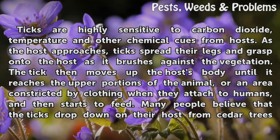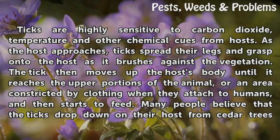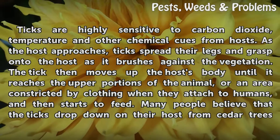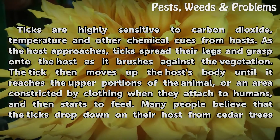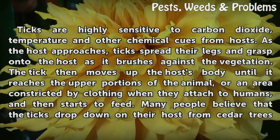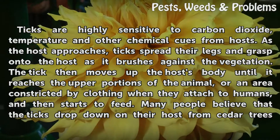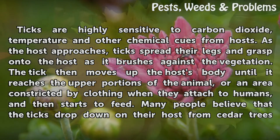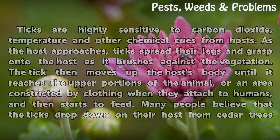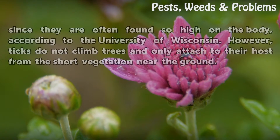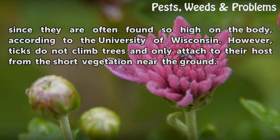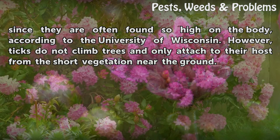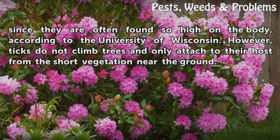Ticks are highly sensitive to carbon dioxide, temperature, and other chemical cues from hosts. As the host approaches, ticks spread their legs and grasp onto the host as it brushes against the vegetation. The tick then moves up the host's body until it reaches the upper portions of the animal, or an area constricted by clothing when they attach to humans, and then starts to feed. Many people believe that ticks drop down on their host from cedar trees since they are often found so high on the body, according to the University of Wisconsin. However, ticks do not climb trees and only attach to their host from the short vegetation near the ground.